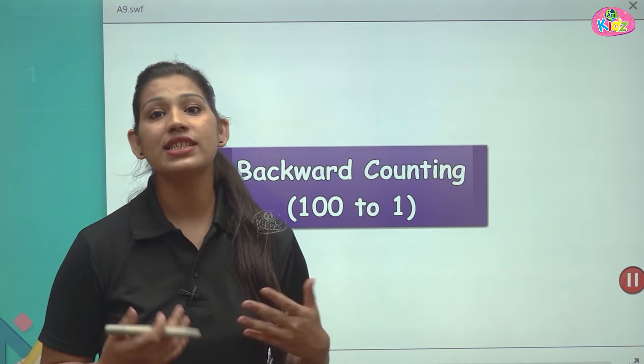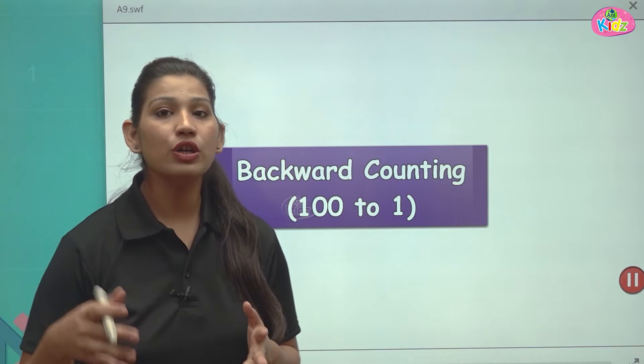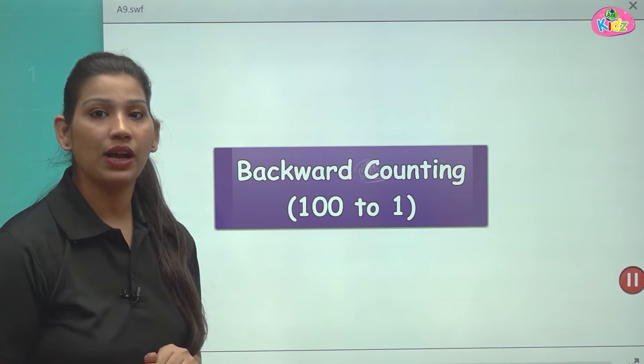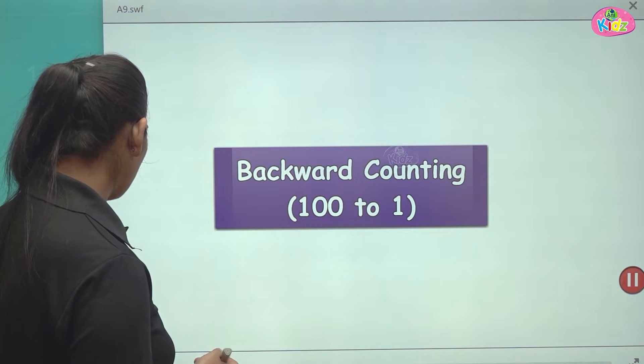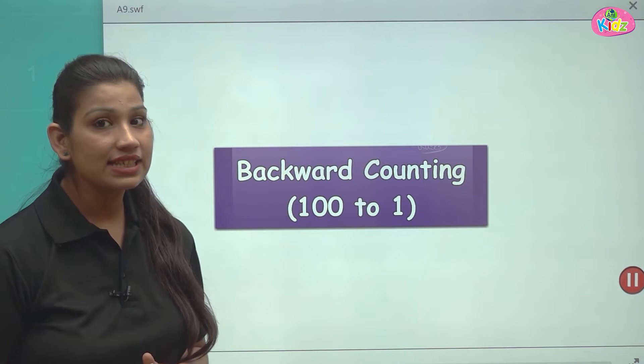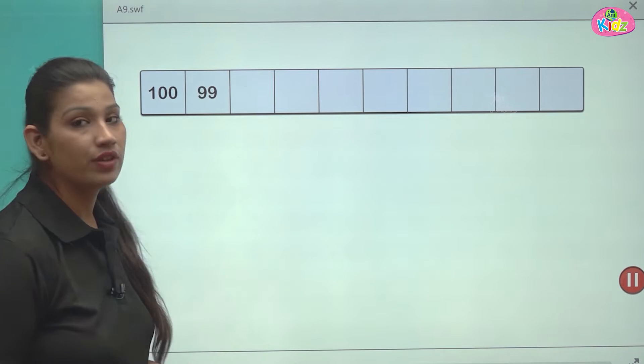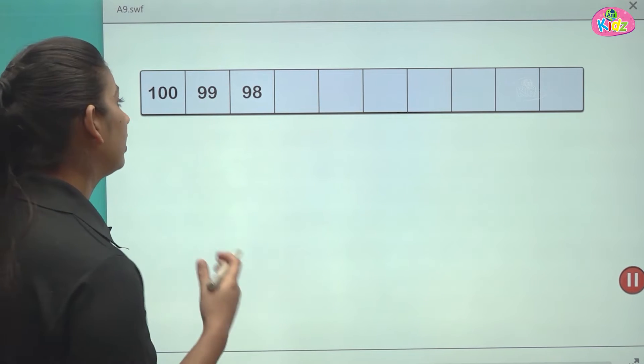You all know students the forward counting. We all do usually the forward counting. Now we will understand and learn about the backward counting. Backward counting is done from the biggest number to the smallest number. We have 100 as the biggest number and we will do the counting till 1.